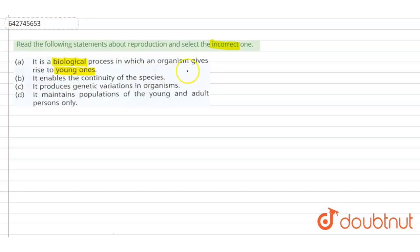Yes, this is correct. Why? Because reproduction is obviously a biological process in which one organism gives rise to two organisms. This is asexual reproduction. Similarly, in sexual reproduction, two organisms give rise to one organism. So the first answer is actually a correct statement - it is a biological process in which an organism gives rise to young ones.